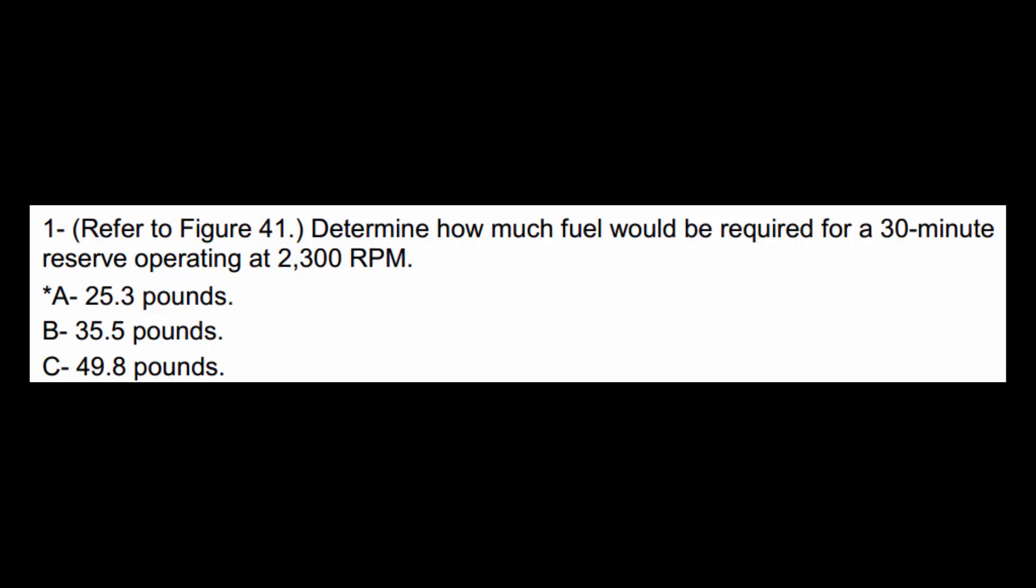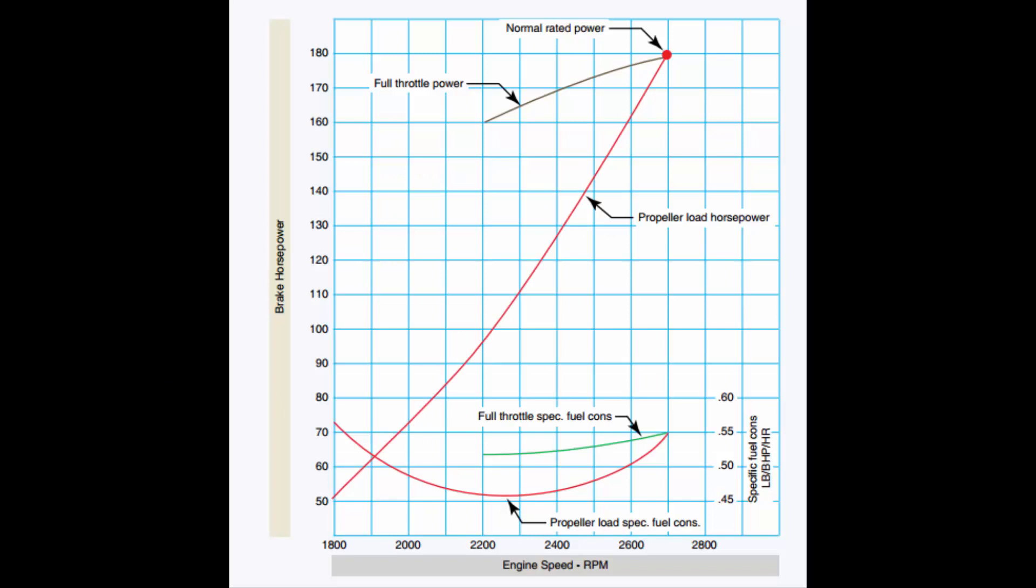So let's look at this chart, figure 39. We'll start at this vertical line, the 2,300 RPM. Before I go into this, this chart is really two charts in one. So we find one answer on one curve, and then we go over to the other. We're going to do this in two steps.